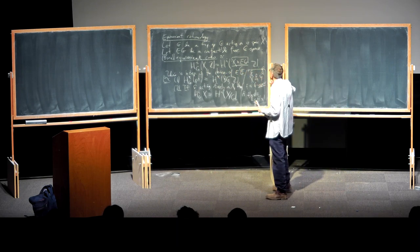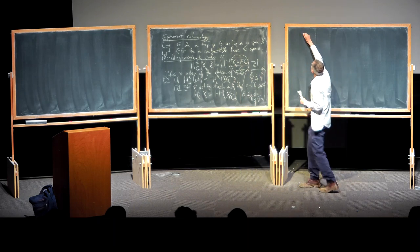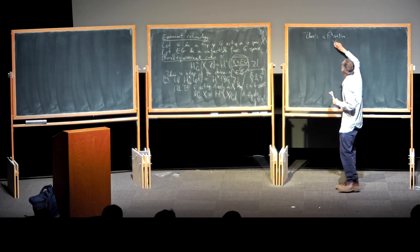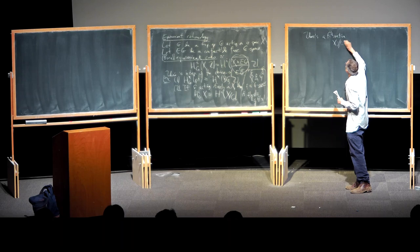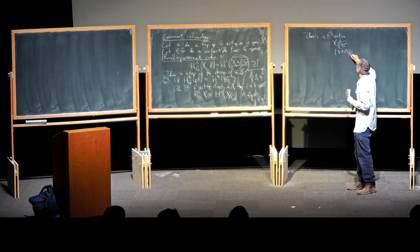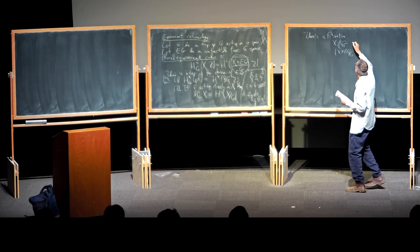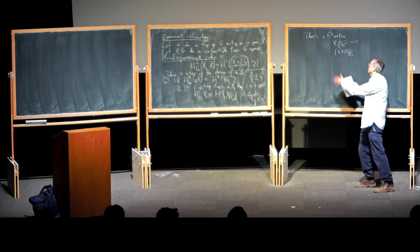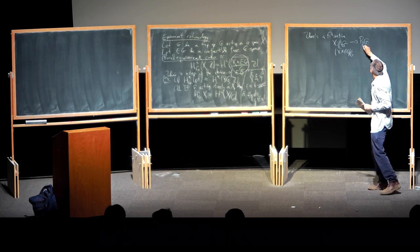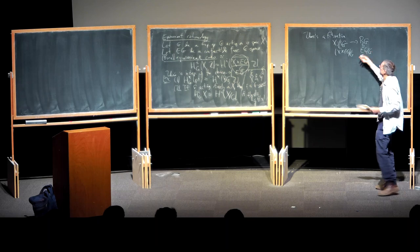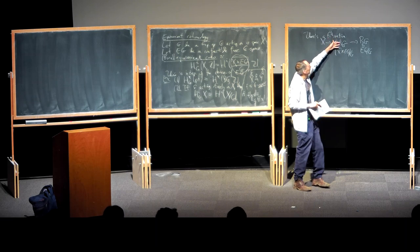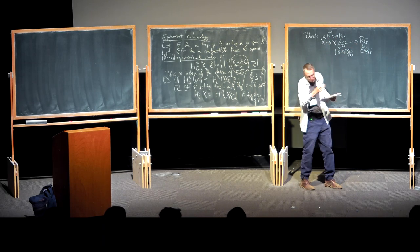You should have a picture in mind for what this space looks like. There is a natural fibration from the Borel construction space — also called the homotopy quotient X//G, that is X×EG/G. There's an obvious projection: if you forget about the X factor, this maps to EG/G, which is BG. The fiber of that map is X. So equivariant cohomology is the cohomology of an X-bundle over BG.